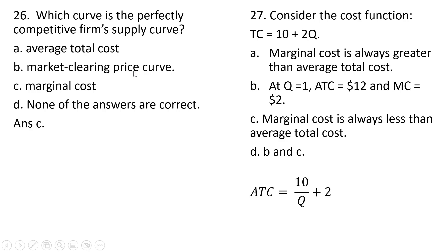To note here, average total cost is just total cost divided by the quantity of output — 10 divided by Q plus 2Q divided by Q gives us this answer. At Q equals 1, average total cost is indeed $12. And marginal cost, as we did in other numerical problems, is just the coefficient in front of Q — every time we produce one more unit of output, total cost always goes up by $2.